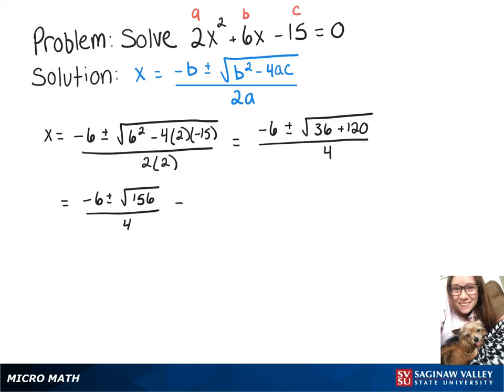Now at that square root we want to think of perfect squares that can go into 156 so that we can simplify that even further. So at this point we'll have negative 6 plus or minus, we can rewrite 156 as 4 times 39, all of that is still over 4, and now we have negative 6 plus or minus 2 root 39 over 4.